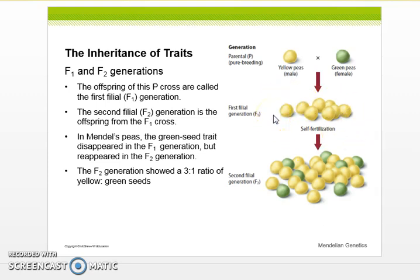So in Mendel's peas, the green seed trait disappeared in the F1 generation but reappeared in the F2. And this gave us a ratio of 3:1 of yellow to green seeds.